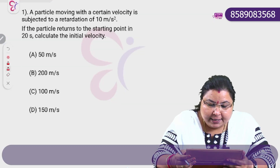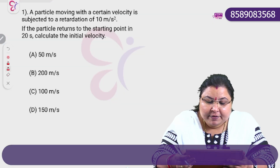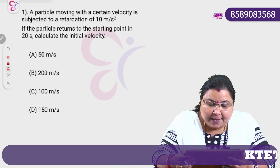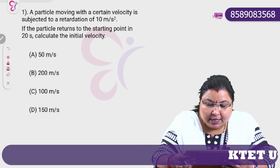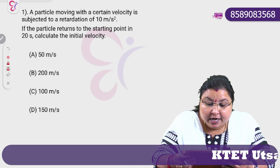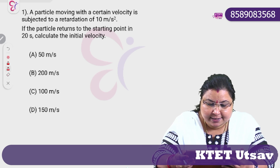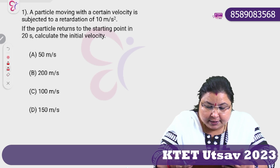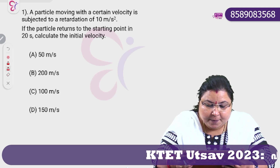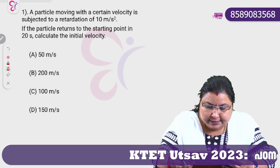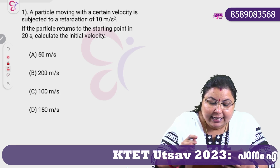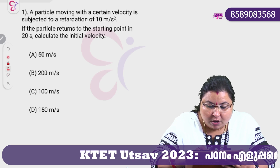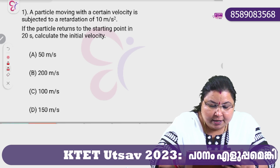A particle moving with a certain velocity is subjected to a retardation of 10 m per second square. If the particle returns to the starting point in 20 seconds, calculate the initial velocity. This is the question.